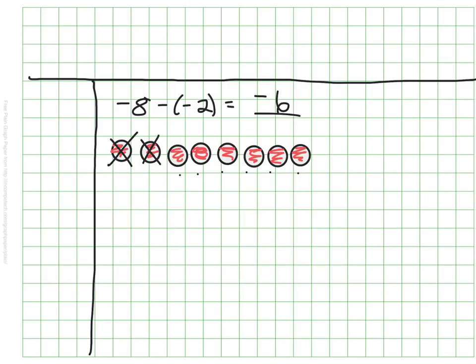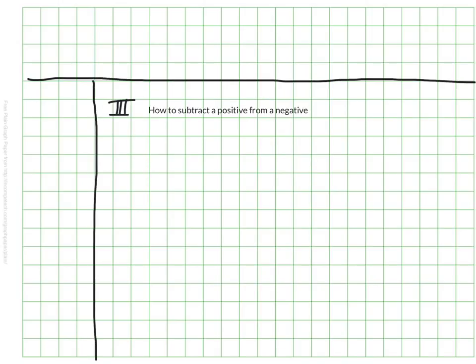Those two examples, positive from positive or negative from negative, are the most straightforward. The next two get a little tricky. Let's look at how to subtract a positive from a negative. So my number sentence so far reads negative 7 minus a positive 5. So I'm starting with negative 7. I'm supposed to take away a positive 5.